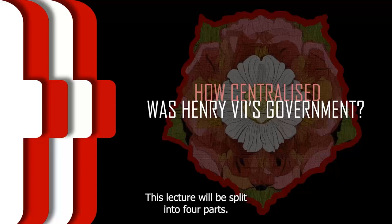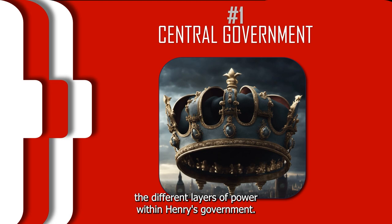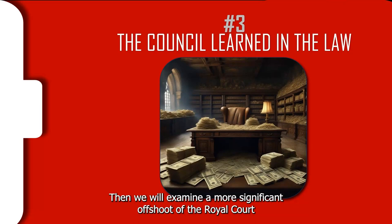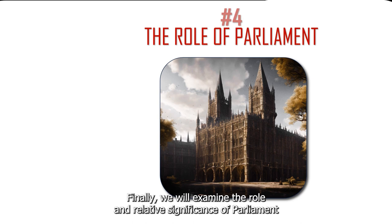This lecture will be split into four parts. In the first section, we will study the different layers of power within Henry's government. In the second section, we will examine the first offshoot, the Star Chamber. Then we will examine a more significant offshoot of the Royal Court called the Council Learned. Finally, we will examine the role and relative significance of Parliament during Henry's reign.